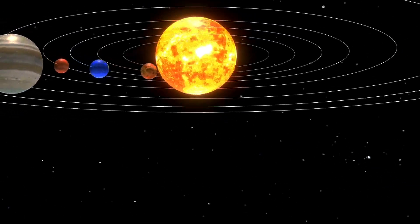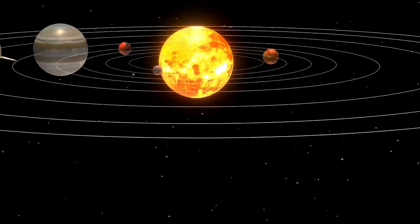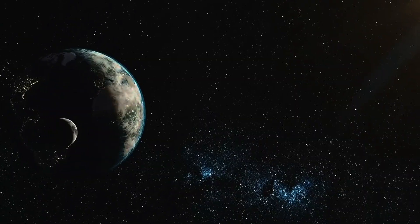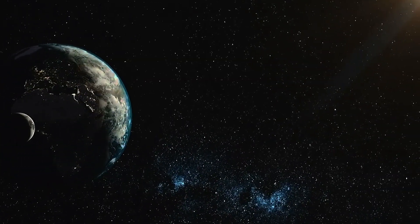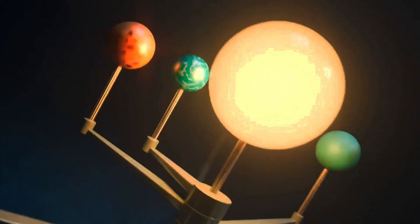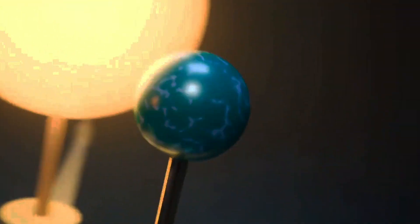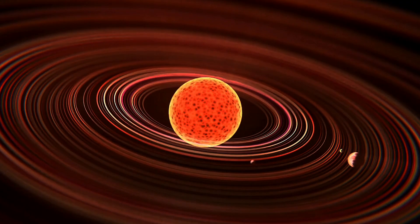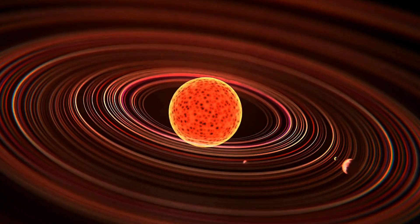Kepler discovered the rules of planetary motion, including that planets traveled in ellipses with the sun at one focus, how much area a given planet would trace out in its orbit in a given amount of time, and the relationship between an orbiting body's semi-major axis, the equivalent of radius but for a non-circle, and its orbital period. These rules still stand today, some 400 years after they were put forth.